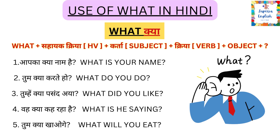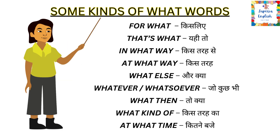Tum kya khaaoge — What will you eat? These were the sentences for the word 'what.' For sentence formation, it is important to remember the sentence structure shown on screen. Some other 'what' words are: for what (kis liye), in what way (kis tarah se), what else (aur kya), whatever/whatsoever (jo kuch bhi), what then (to kya), what kind of (kis tarah ka), at what time (kitne baje).